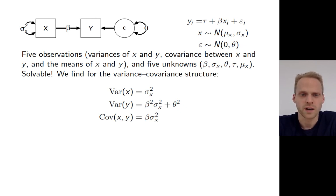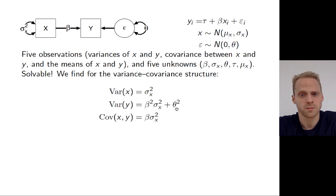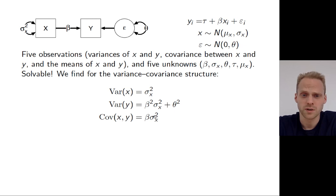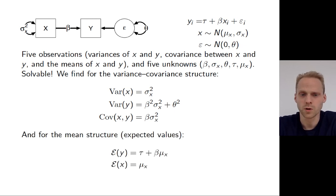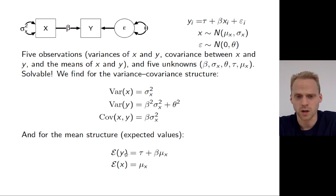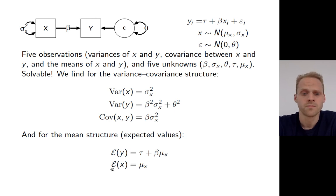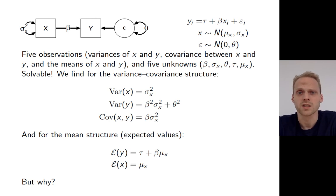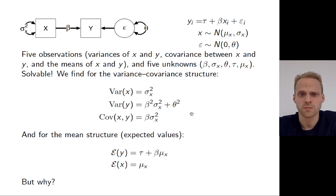For the variance-covariance structure, the implied structure is: the variance of X is simply the variance of X; the variance of Y equals beta squared times the variance of X plus the variance of the residual; and the covariance between the two equals beta times the variance of X. For the mean structure, the expected value of Y equals tau plus the regression coefficient times the mean of X, and the mean of X is simply the mean of X. In the end of this video you should be able to derive this yourself.